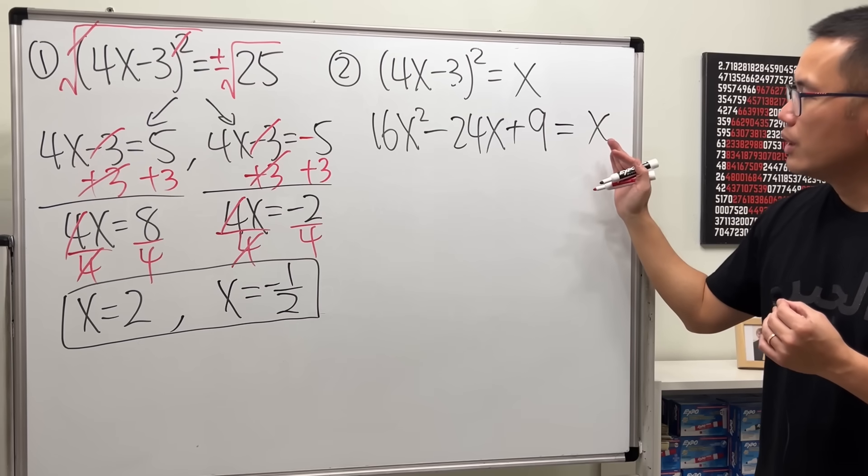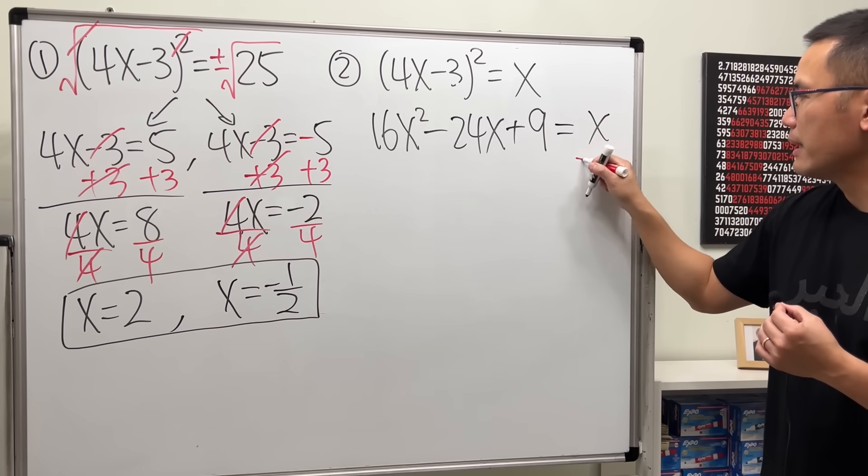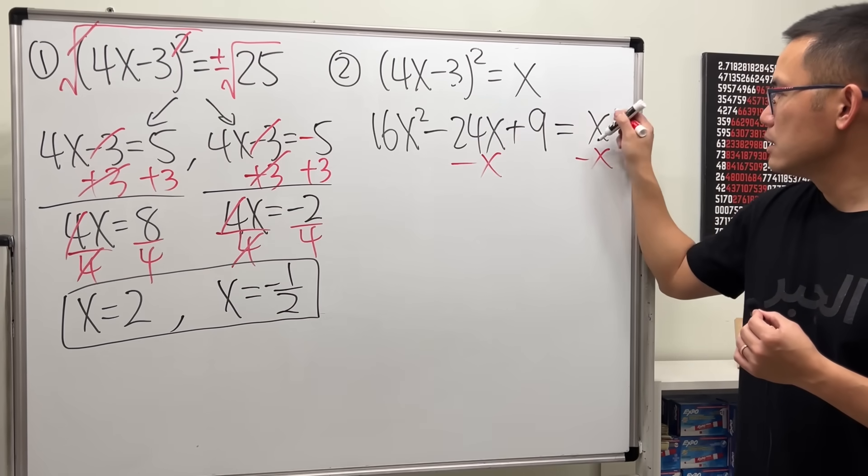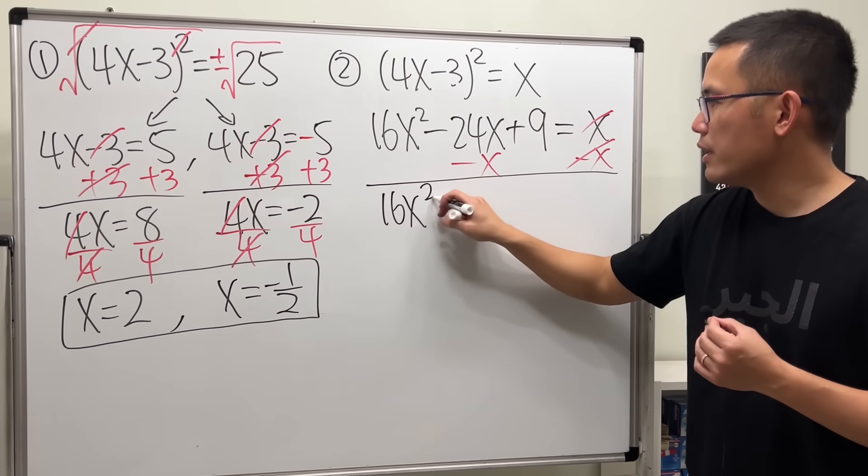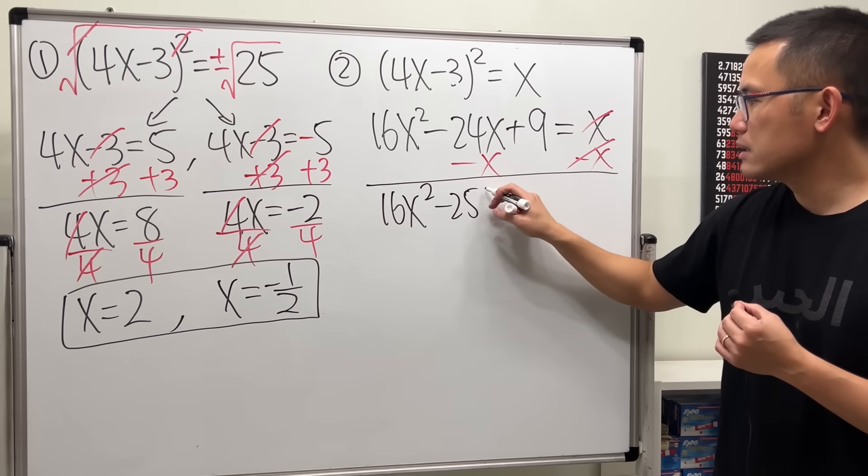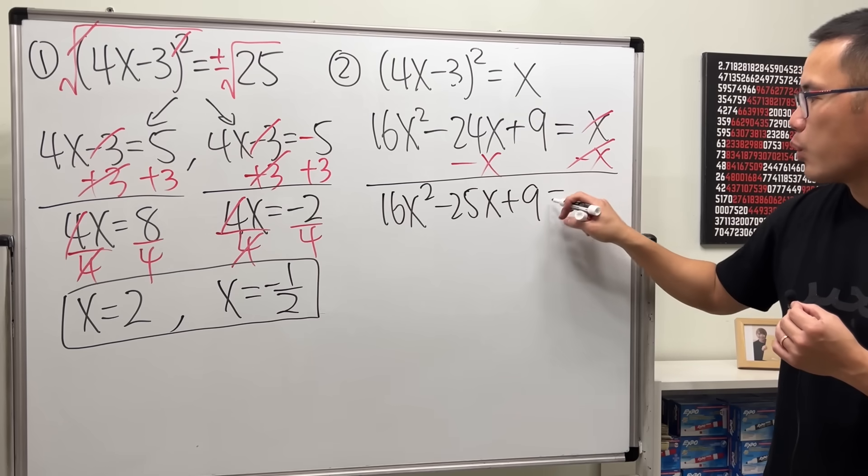And that is equal to x. Then, we want to put one side to be 0. So, that's minus x to both sides.